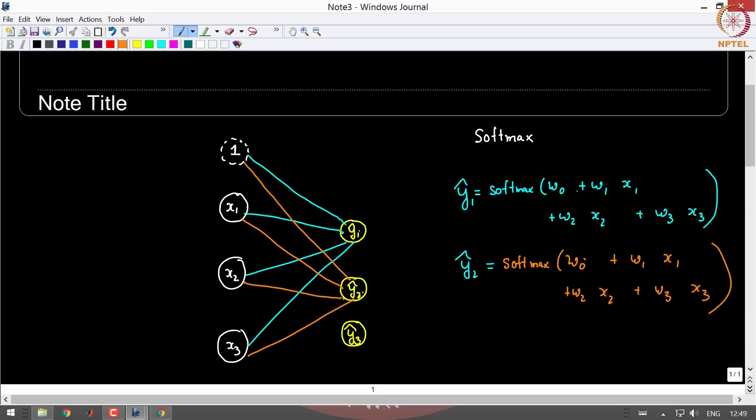So we need some terminology in order to distinguish these two weights. So I will call it W01, W11, W21, W31, where the one stands for the output and the zero, one, two, three actually stands for the input. Similarly, you can easily see that now this should be W02, W12, W22, and W32.